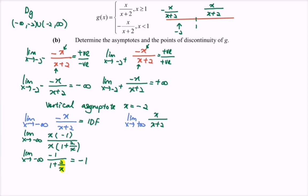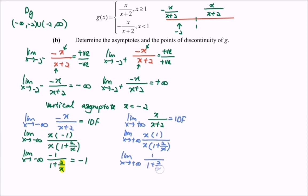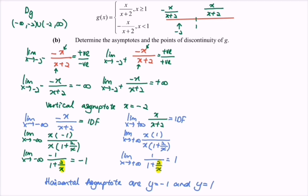For x approaching positive infinity, we use x over (x plus 2). Factorizing x gives 1 over (1 plus 2/x). As x approaches positive infinity, 2/x approaches 0, so the limit equals 1. Therefore, the horizontal asymptotes are y equals negative 1 and y equals 1. In summary, there are three asymptotes: vertical asymptote x equals negative 2, and horizontal asymptotes y equals negative 1 and y equals 1.